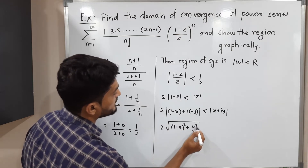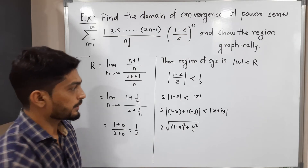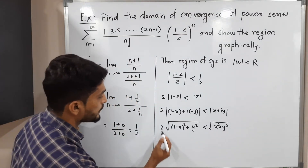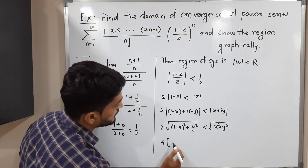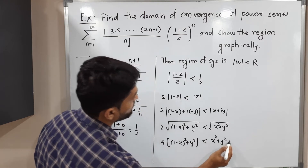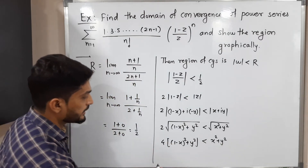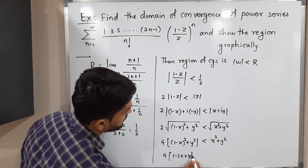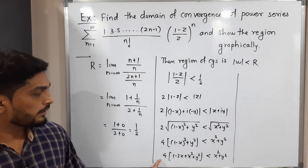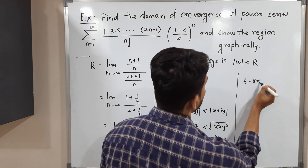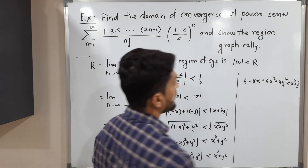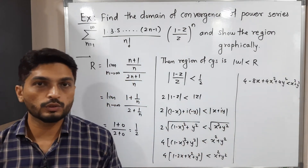Computing the moduli: 2 times sqrt((1-x)² + y²) < sqrt(x² + y²). Squaring both sides: 4[(1-x)² + y²] < x² + y². Expanding the left side: 4[1 - 2x + x² + y²] < x² + y², giving 4 - 8x + 4x² + 4y² < x² + y².